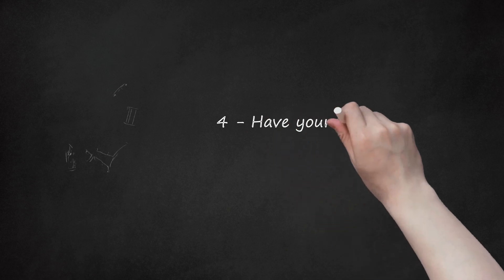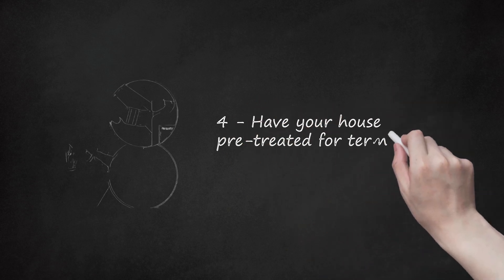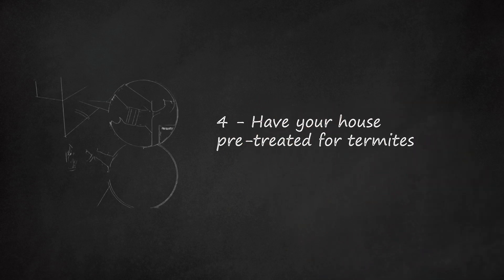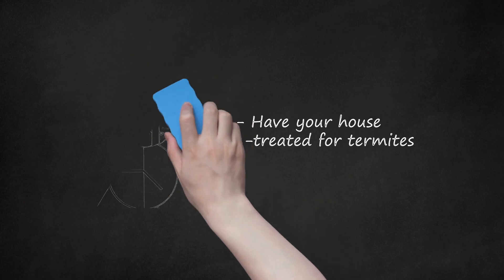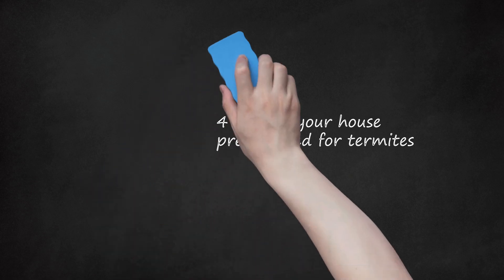Step 4: Have your house pre-treated for termites. If you're building a new home, make sure to consider getting your house pre-treated for termite prevention. It's much easier to set a termite barrier with termiticide before you begin construction, by creating the barrier on the land where the house will be. If you live in the southwest of the U.S., you should highly consider this option, as this is where most termites are found.